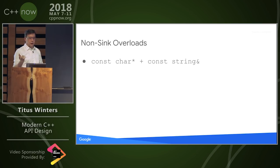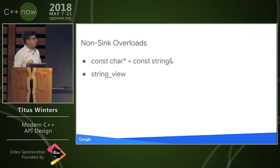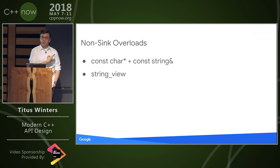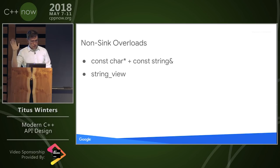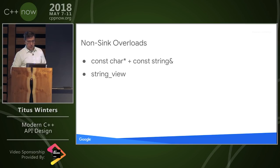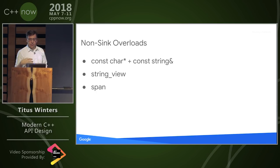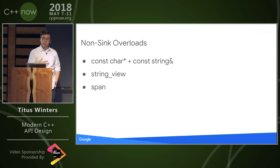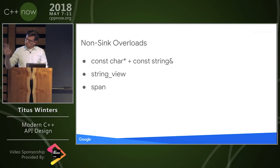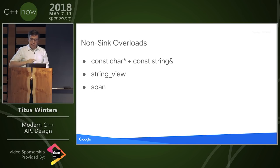Let's talk about non-sinks. When talking about non-sink overloads, we often see things taking a char star and a const string ref. In more modern code, we'd see this as probably string_view — though this runs up against questions of the char star constructor and how to handle null. Once we start talking about string_view as the string-like parameter type, we start looking at other non-owning parameter types, and span comes to mind.